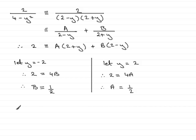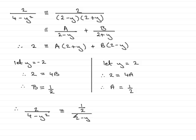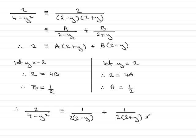Now I can summarise: the fraction 2 over 4 minus y squared is identical to A half over (2 minus y) plus a half over (2 plus y). To write this more neatly, multiply top and bottom by 2, giving 1 over 2(2 minus y) plus 1 over 2(2 plus y). And there we have 2 over 4 minus y squared expressed in partial fractions. That brings us to the end of this part of the question.